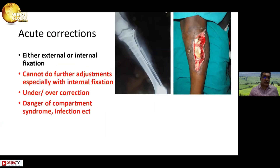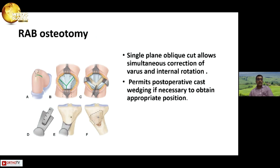Ilizarov is not the only option. You can use internal fixation, but the problem is you cannot do further adjustments after the surgery. There may be a risk of under- or over-correction, and things can become complicated with compartment syndrome and infection with internal fixation, especially in acute corrections. A fibula osteotomy is a good procedure in the early stages — a single oblique cut allows simultaneous correction of varus and internal rotation, and you can do some post-operative wedging to obtain the appropriate position.